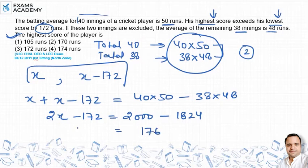2000 minus 1824 gives us 176. For 2x, when we calculate, 172 goes to the other side and adds, so 2x equals 176 plus 172, which gives us 348.